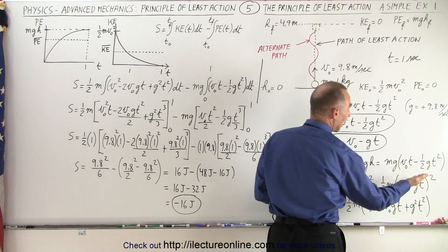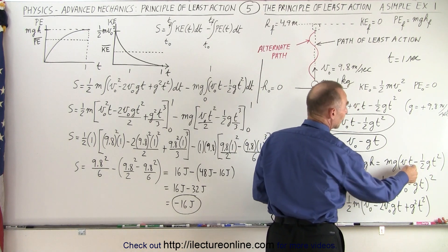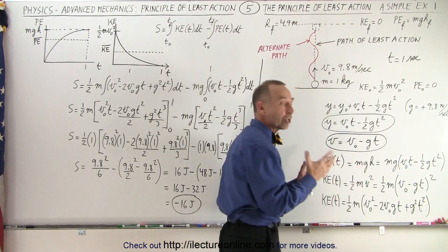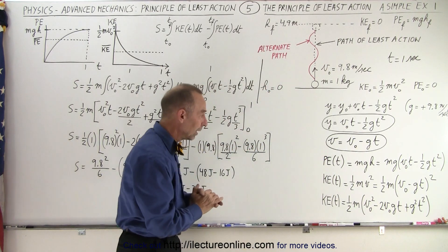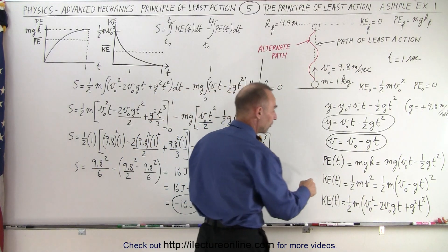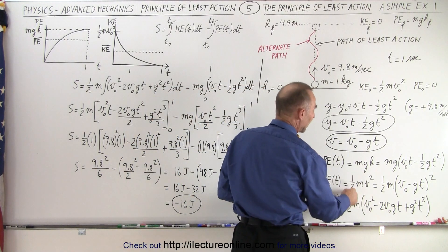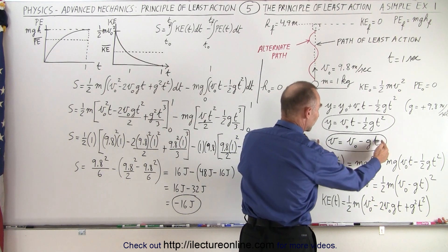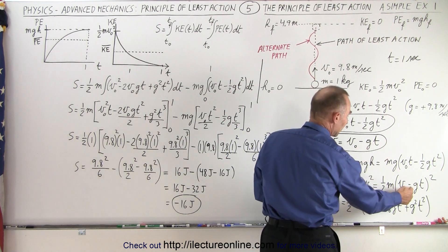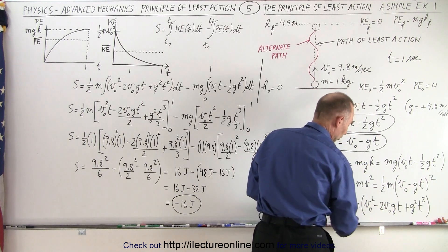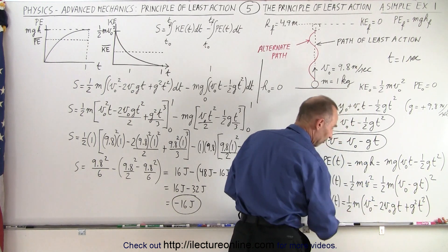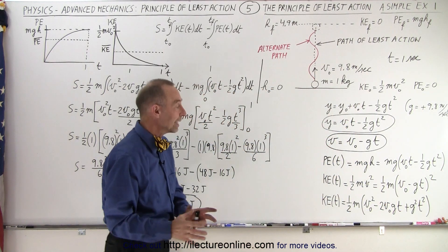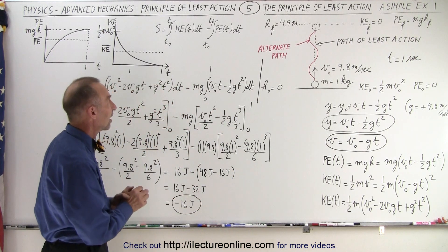When time equals zero, the height is zero. When time equals one, the height will be 4.9 — you can check that quickly. The kinetic energy as a function of time will be one-half mv². Instead of v, we substitute in the kinematic equation v-initial minus g·t, square that, and we get the kinetic energy as a function of time.